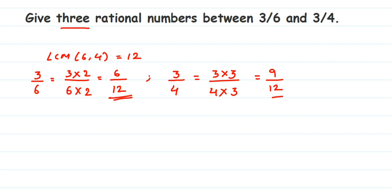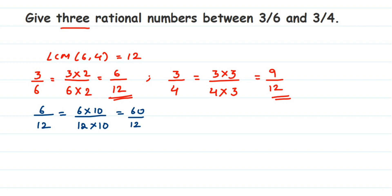I'm going to multiply both fractions by 10 since it's easy to work with. So 6/12 multiplied by 10/10 gives 60/120. For 9/12, multiply by the same number — 9 × 10 = 90 and 12 × 10 = 120 — giving 90/120. You must multiply both fractions by the same number so the denominators stay equal.